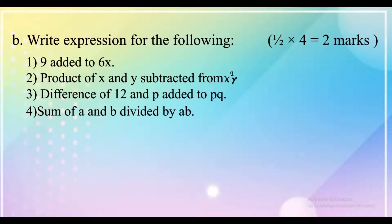The second question is: write the expression for the following. First, 9 added to 6x. Second, the product of x and y subtracted from x square y. Third, difference of 12 and p added to pq. Fourth, the sum of a and b divided by ab. It carries two marks, with four sub-questions each carrying half a mark.